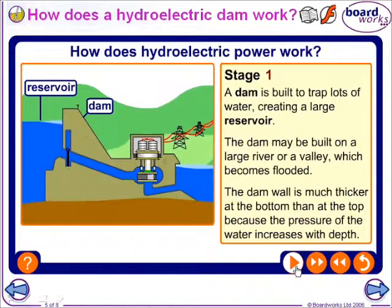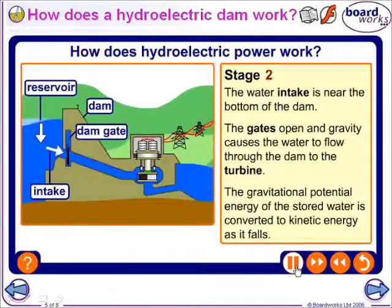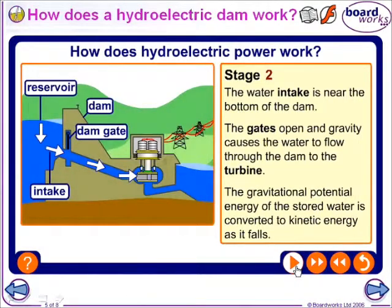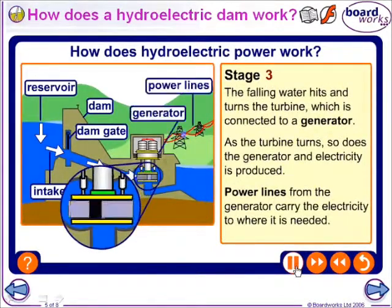The water intake is near the bottom of the dam. The gates open and gravity causes the water to flow through the dam to the turbine. The gravitational potential energy of the stored water is converted to kinetic energy as it falls. The falling water hits and turns the turbine, which is connected to a generator. As the turbine turns, so does the generator and electricity is produced.